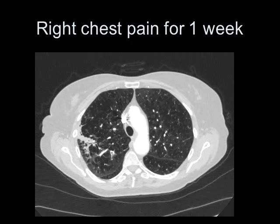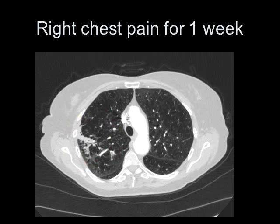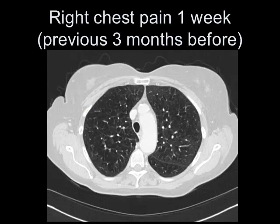Here's a patient with right-sided chest pain for one week. This area of opacification has an irregular margin with a standing-tall air bronchogram — I would call this consolidation. We have a CT scan from three months previously showing that area was clear. This was an outpatient with no particular reason to suspect atelectasis, and they recovered afterwards.